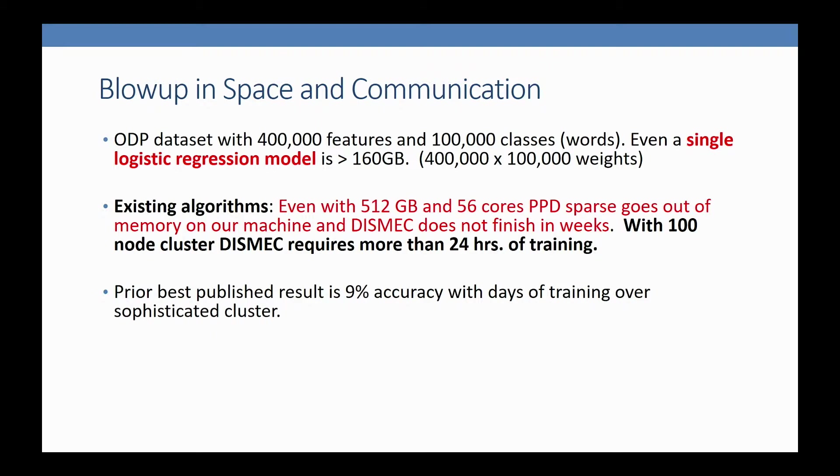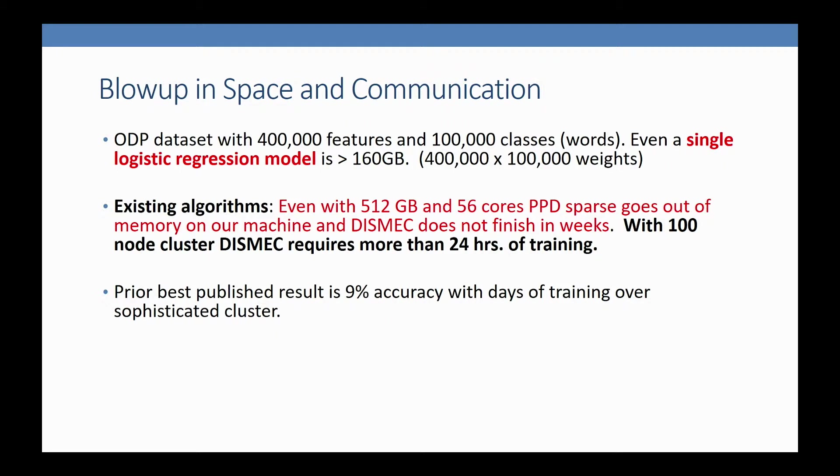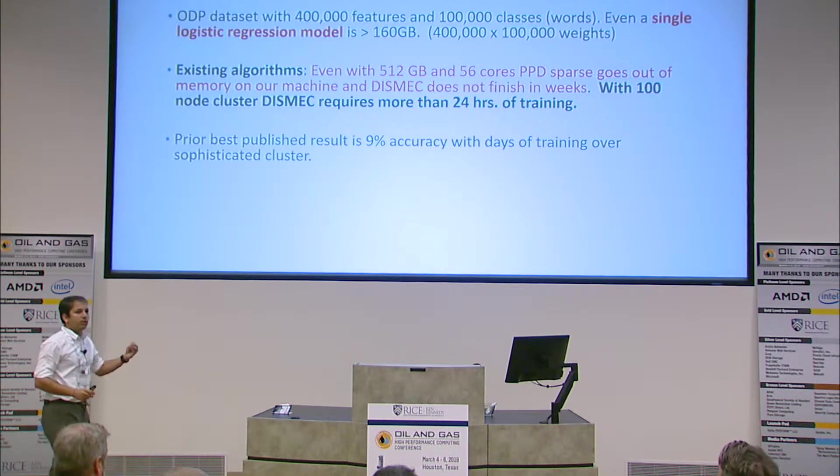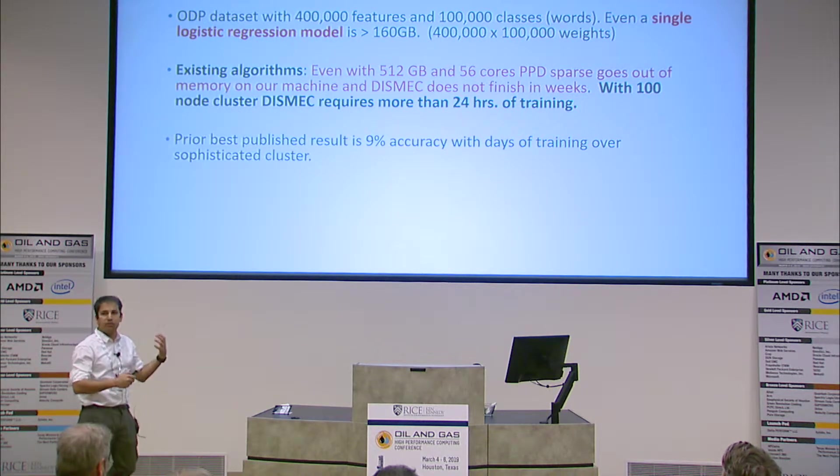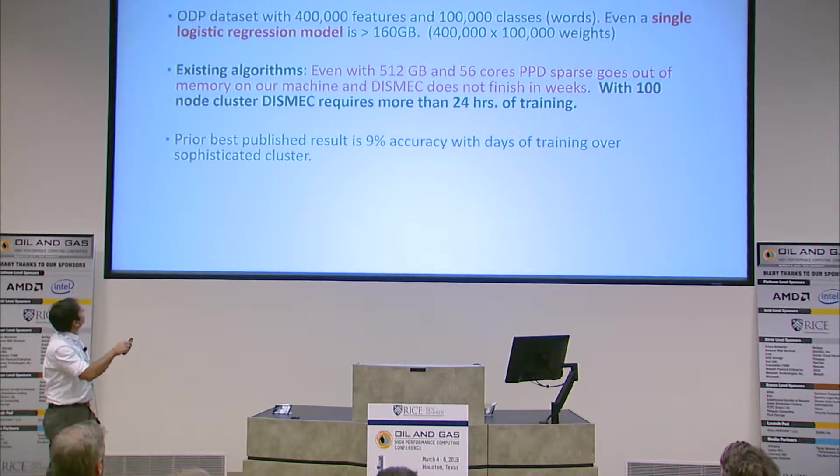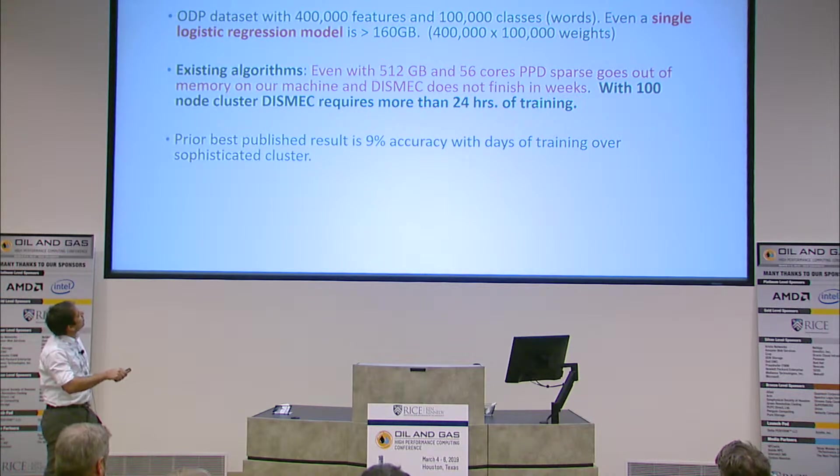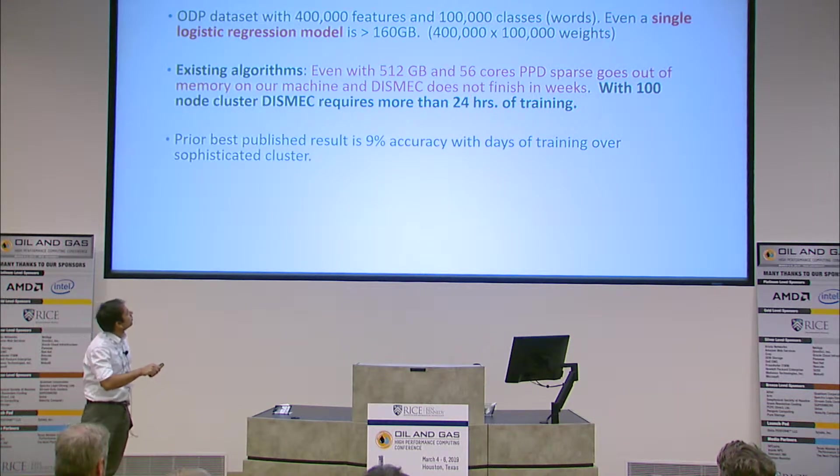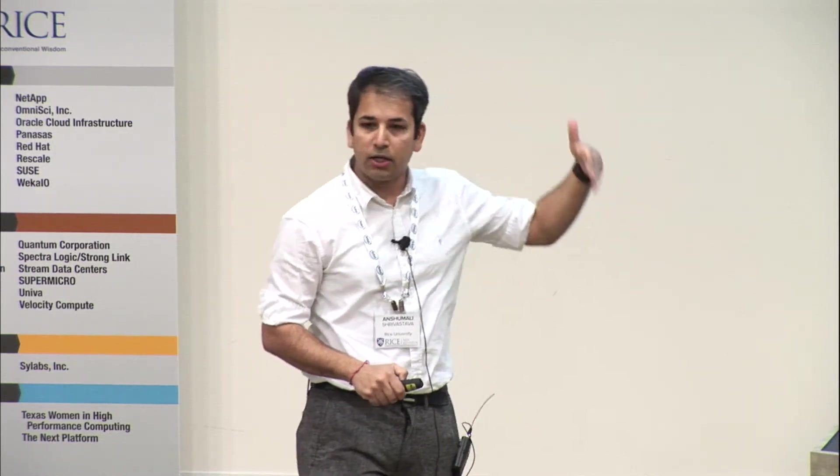I'll look at one particular problem: the Open Directive Project dataset released by Microsoft. It's multi-class classification where you're given a Wikipedia document and have to predict which category it belongs to. There are 100,000 categories—not very big—and 400,000 features per example. A single logistic regression is roughly 160 gigabytes of memory—not a complex model, just one weight vector for each class. The best algorithm requires a 100-node cluster with more than 24 hours of training to achieve 9% accuracy, which is good because random accuracy is 1 over 100,000.